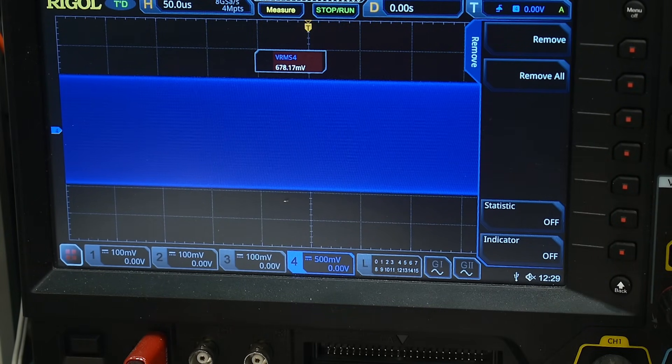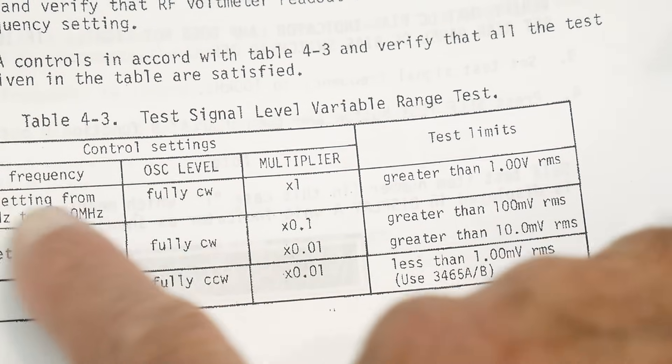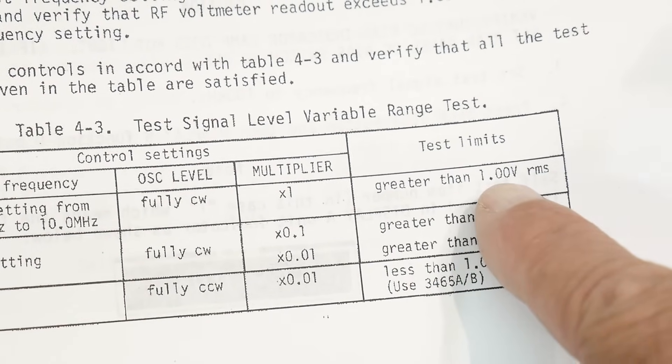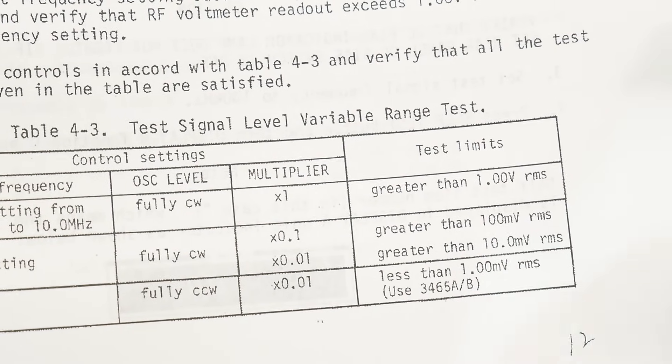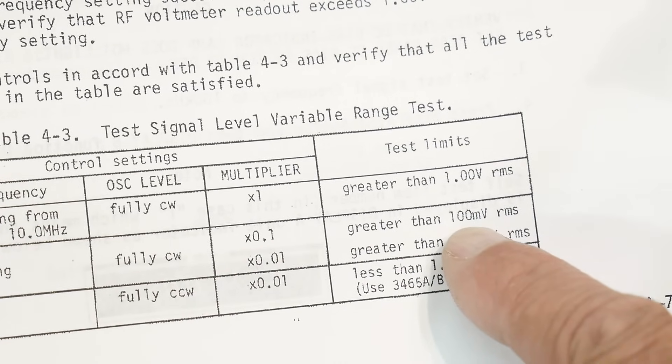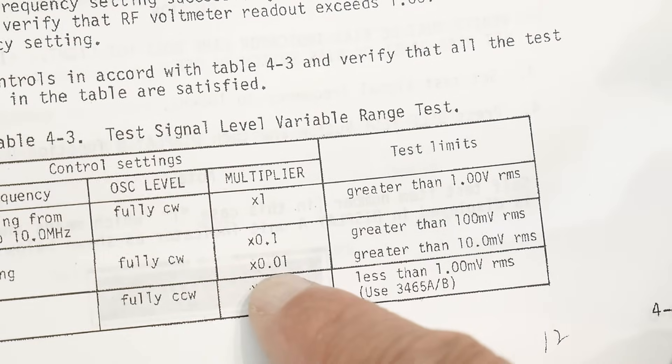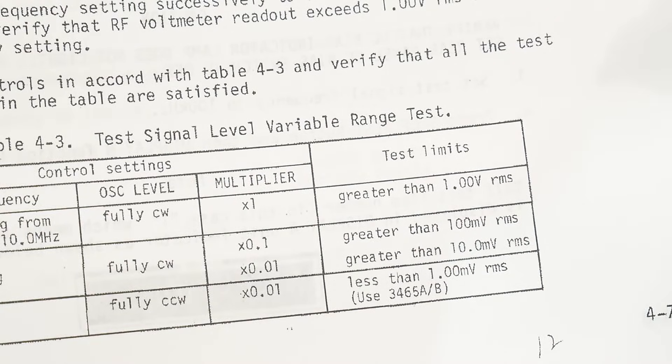So the top two are low. The book says, you do these all, which we've just done, they're supposed to be greater than a volt, and we are low on the top two ranges. And then we're going to do, with a 0.1 multiplier, and it should be 100 millivolts, and then the 0.01 multiplier, 10 millivolts.